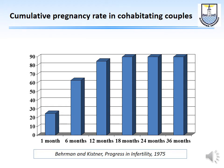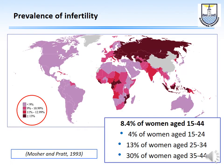But for the sake of generality, we are going to stick to the WHO definition of one year. The prevalence of infertility is roughly 10% — about 8.4% according to the study by Mosher and Pratt published in 1993.